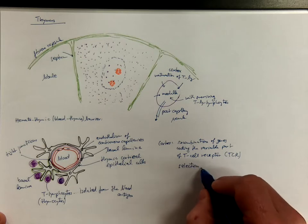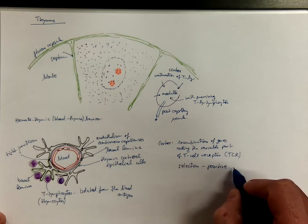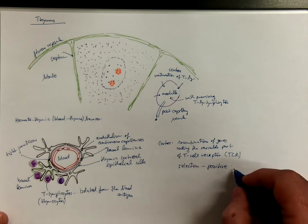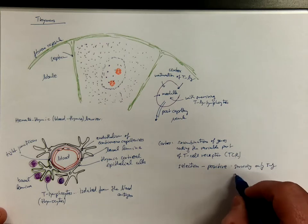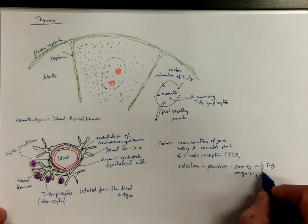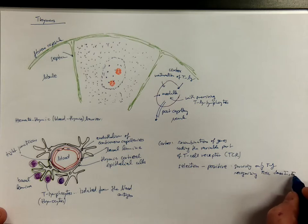It's a two-step selection, either positive or negative. Positive selection means only T lymphocytes that are able to recognize the MHC molecules type 1 and type 2 can survive. Only T lymphocytes recognizing MHC—major histocompatibility complex—class 1 and 2 molecules survive.